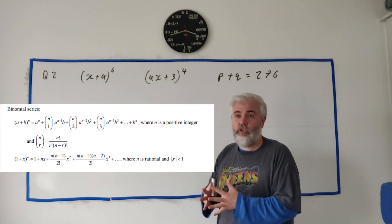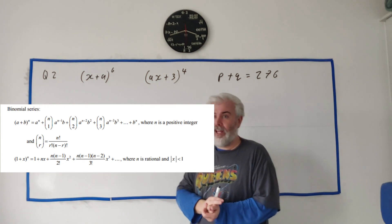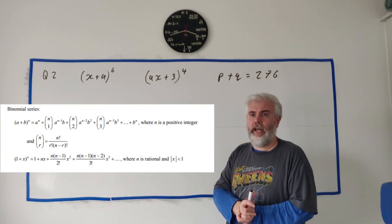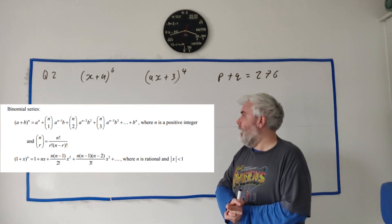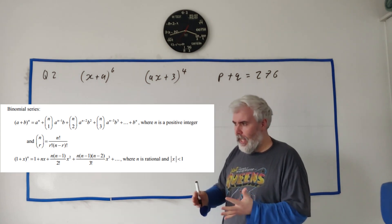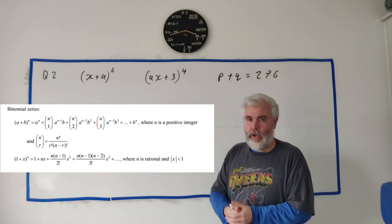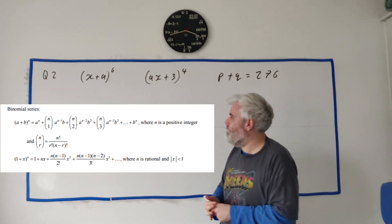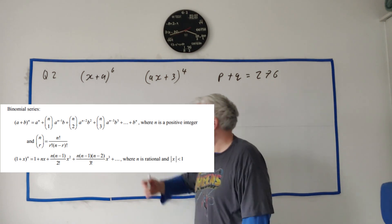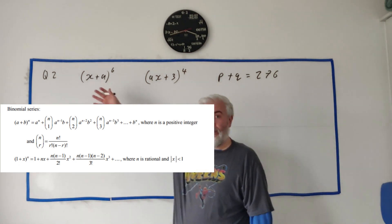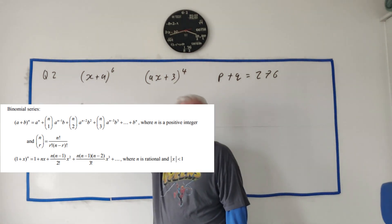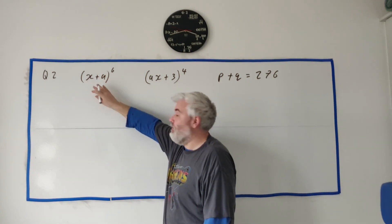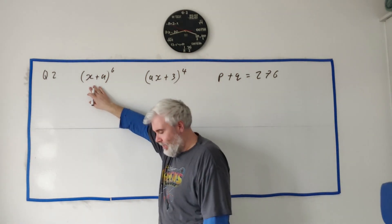Good news — you have the binomial expansion and they give you the formula for this in your list of equations. I haven't zoomed in enough so I can't quite see it, but I roughly remember it. It's n choose r. Let me just do it specifically for these two expressions.